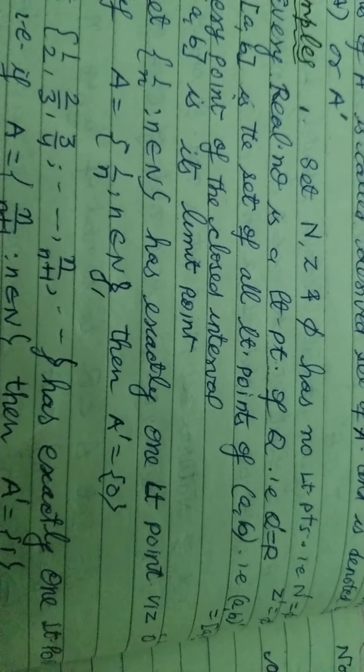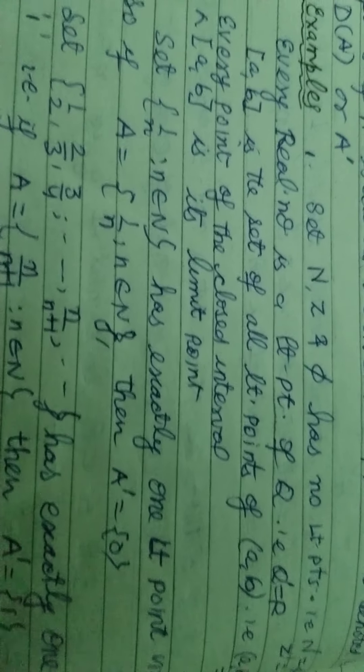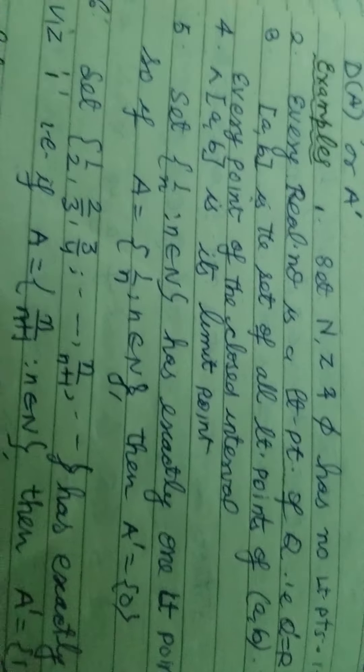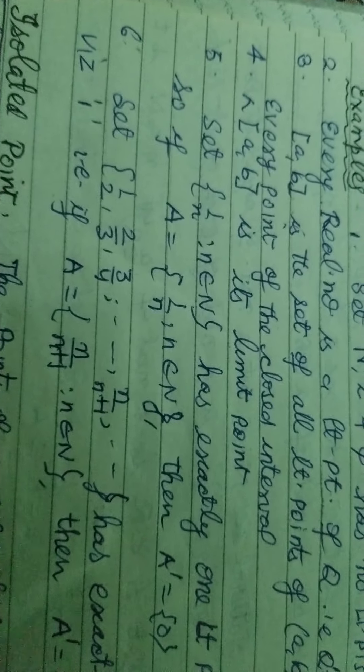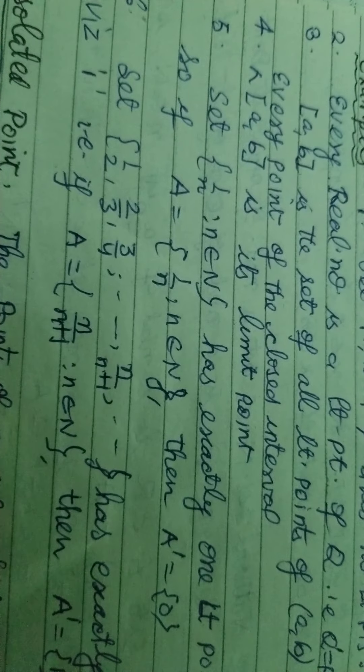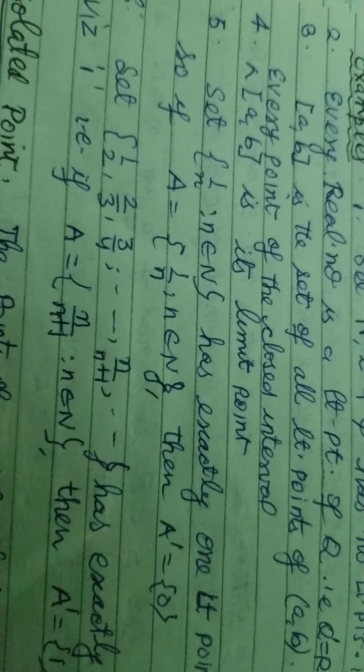The set {1/n : n is a natural number} has at least one limit point, which is 0. So if A = {1/n : n is a natural number}, then the derived set A' contains 0, because 0 is its limit point. The set of all limit points is known as the derived set.